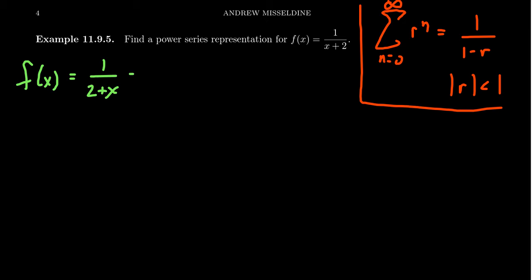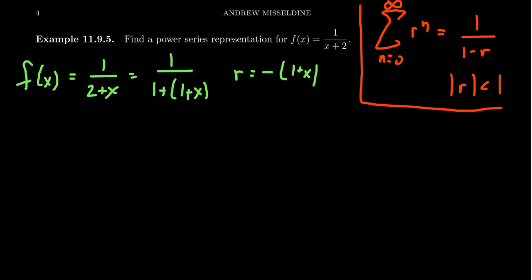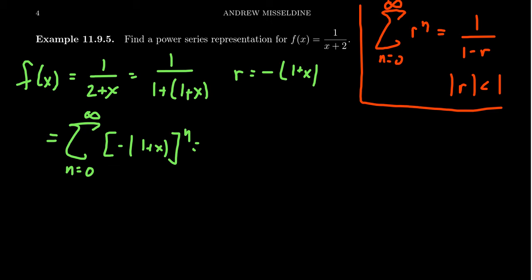I can get a 1 in there from the fact that 2 is just 1 plus 1. So we get 1 over 1 plus (1 minus x). Then because we have a plus sign here and we want a negative sign, that tells us our ratio r is going to be negative (1 + x) — basically a double negative going on there. With that in mind, the geometric series becomes the sum from n=0 to infinity of negative (1+x) raised to the nth power.